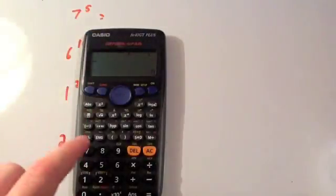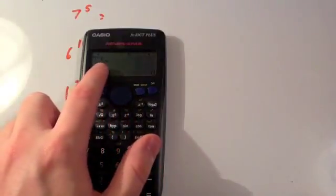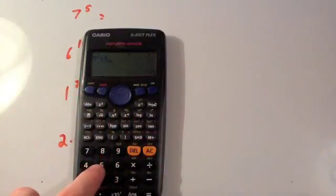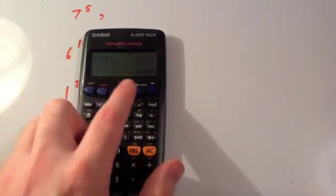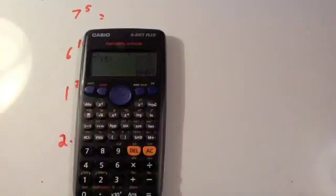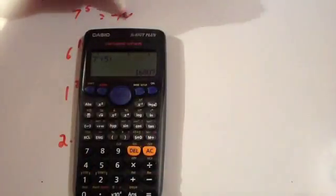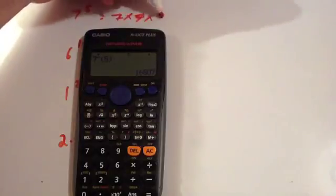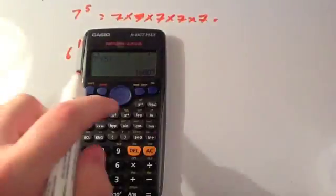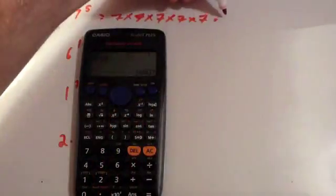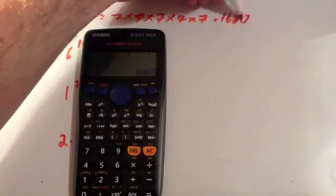Let's do 7 to the power of 5. Press 7, then the power button — you'll see a little arrow and bracket — then enter 5, close brackets, and press equals. You get 16,807. So 7 times 7 times 7 times 7 times 7 equals 16,807.